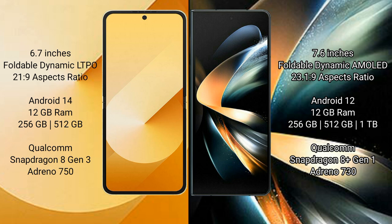Samsung Galaxy Z Flip 6 comes with 12GB RAM and 256GB or 512GB internal storage, Qualcomm Snapdragon 8 Gen 1 processor and GPU Adreno 730. Samsung Galaxy Z Fold 4 comes with 12GB RAM and 256GB, 512GB, or 1TB internal storage, Qualcomm Snapdragon 8 Gen 1 processor and GPU Adreno 730.